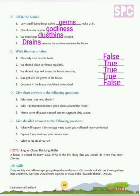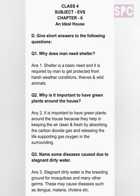Question D: Give short answers. Question 1: Why does man need shelter? Answer: Shelter is a basic need and it is required by man to get protected from harsh weather conditions, thieves and wild animals. Question 2: Why is it important to have green plants around the house? Answer: It is important to have green plants around the house because they help in keeping the air clean and fresh by absorbing carbon dioxide and releasing oxygen. Question 3: Name some diseases caused due to stagnant dirty water. Answer: Stagnant dirty water is the breeding ground for mosquitoes and many other germs, which may cause diseases such as dengue, malaria, cholera, etc.